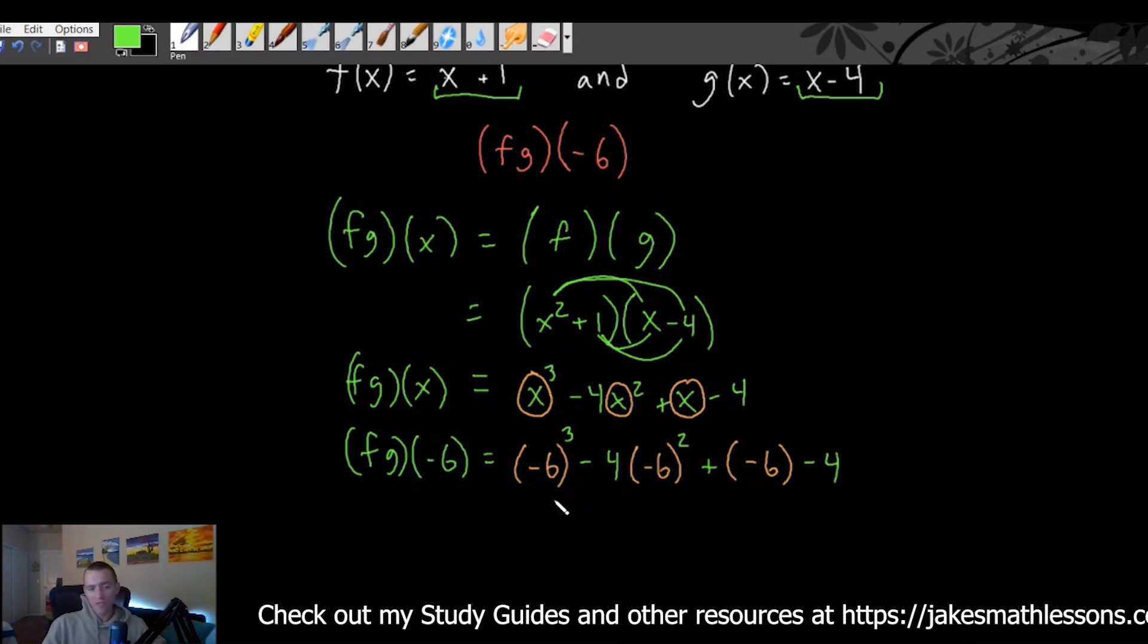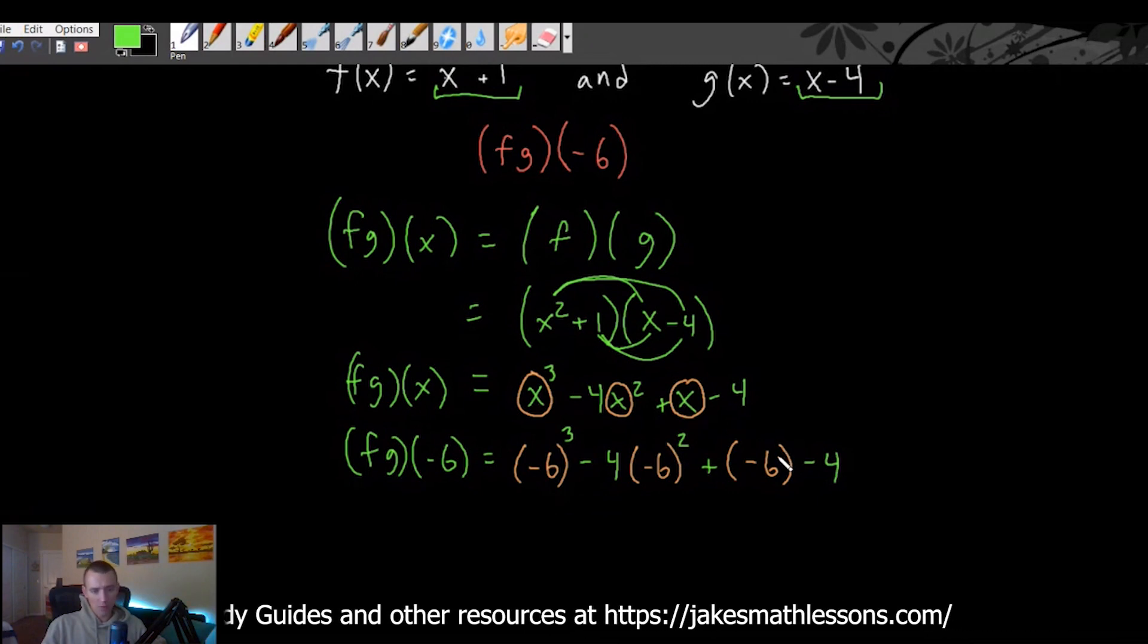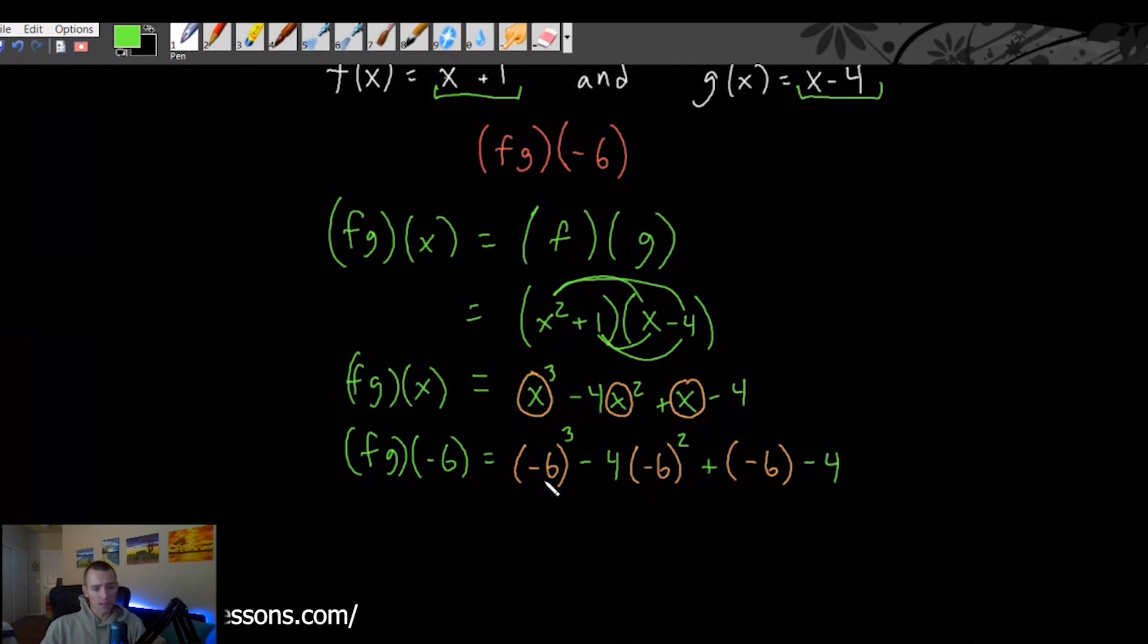And again, just like I've been saying, just like we've been doing, make sure you put that negative 6 in parentheses. Don't think I'm just writing that to kind of show you, to make it more clear of what you're doing. You really do need those parentheses there, especially when it's a negative number. Because if you don't do that, it's not going to distribute and multiply the way that it's supposed to.